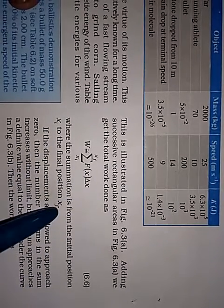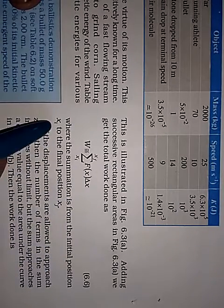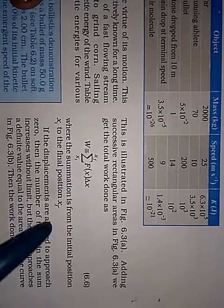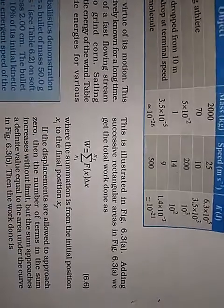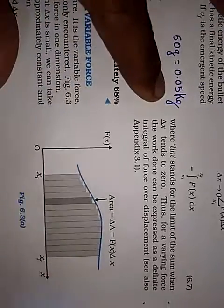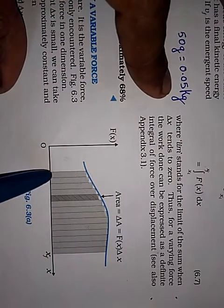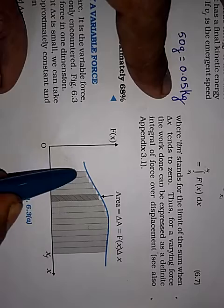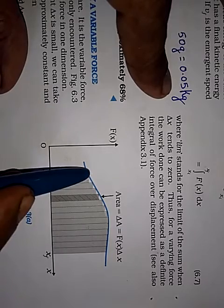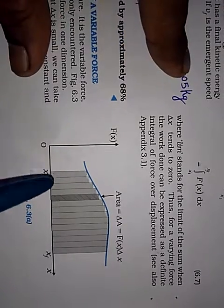Where the summation is from the initial position x i to the final position x f. So the idea is, for this graph, this is del x. So del x into this f1. So you will get this work done.